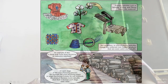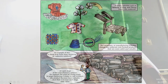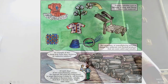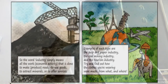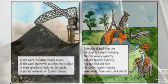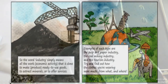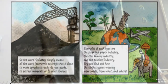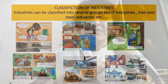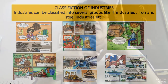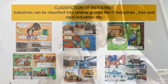The last category of industries is based on ownership — who owns the industry? Industries can be classified into private sectors, meaning owned by one individual or a group of individuals; or a public sector unit, which means owned by the government; or a joint sector, which is a combination of private and public; or cooperative types.